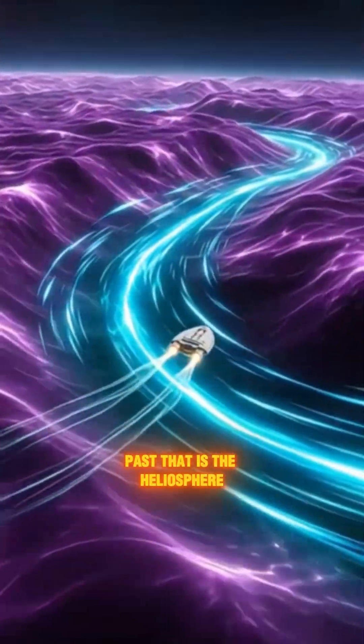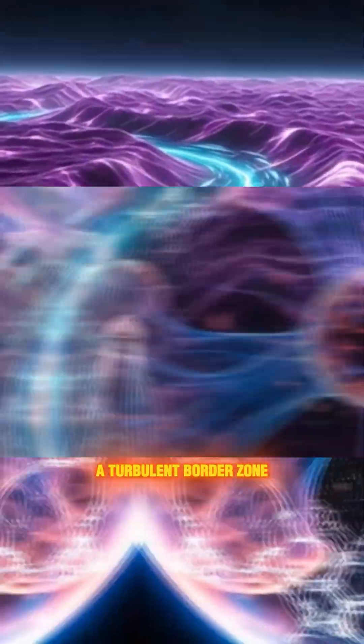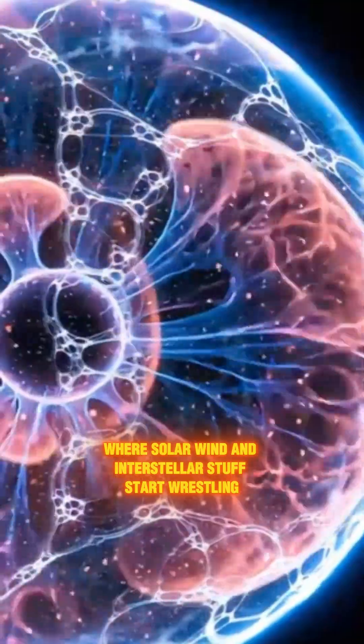Past that is the heliosheath, a turbulent border zone where solar wind and interstellar stuff start wrestling.